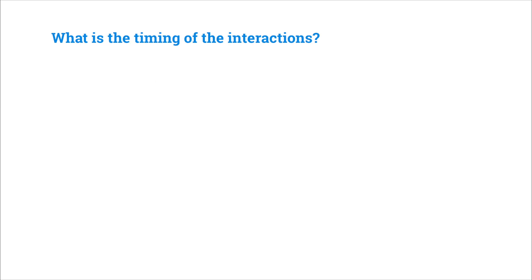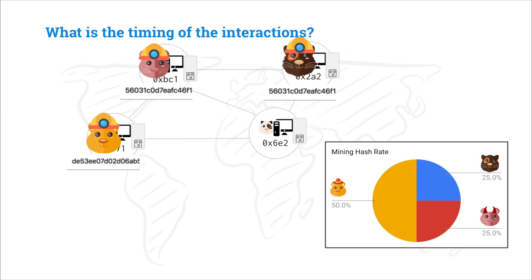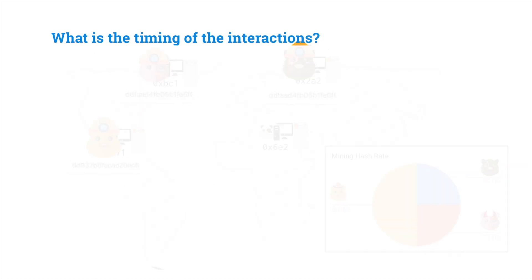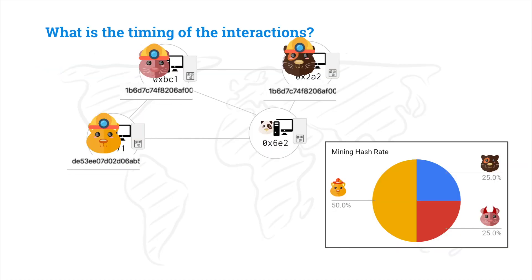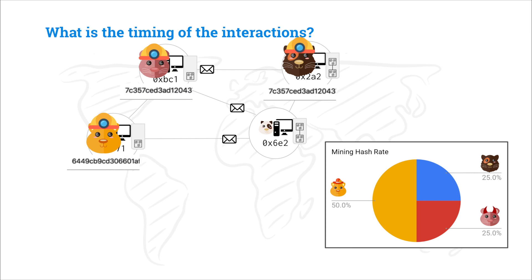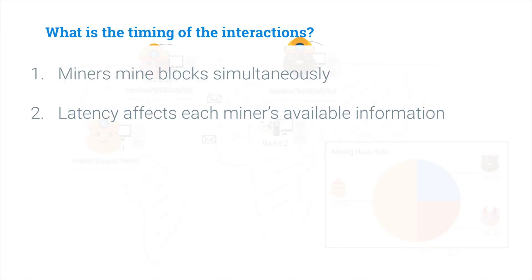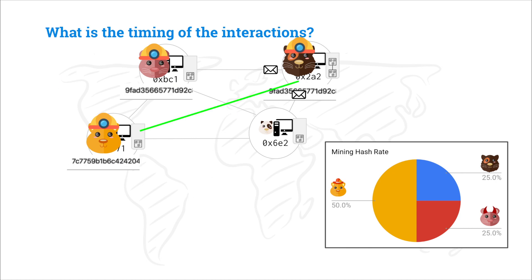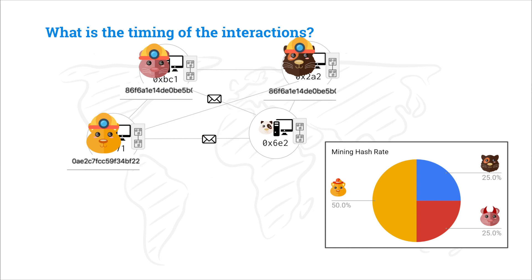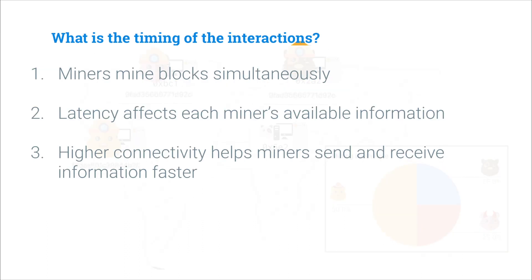The next question is: what is the timing of these interactions? All of our miners are mining blocks at the same time. Also, when Bob finds a second block, he can start mining on that second block immediately, but Mallory and Alice don't know about the block until that packet reaches them on the network — so latency definitely affects which blocks miners know about. If Alice and Bob connect as peers, Bob can send a packet directly to Alice, so Alice will know about Bob's block sooner. Being connected to more peers helps miners send and receive information faster.